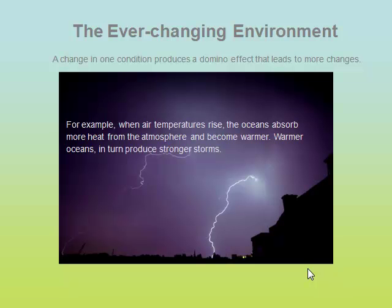The environment is constantly changing. Changes in the environment detected by organisms are called stimuli. Light, temperature, water, gravity, and chemicals in the atmosphere are all examples of environmental stimuli. Environmental conditions specify the characteristics of the type of life that will be most successful or thrive within it. To survive, organisms must be aware of any changes and be able to adapt. Some changes are insignificant, but others can be deadly.